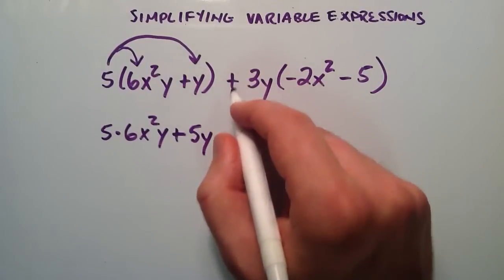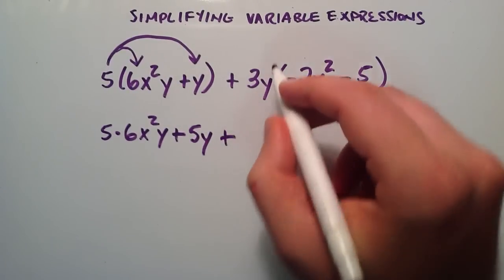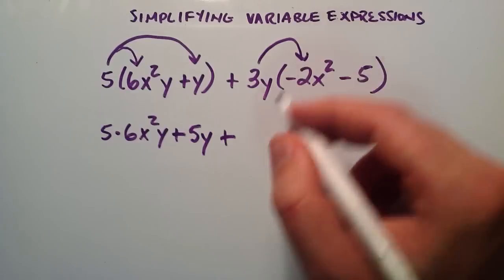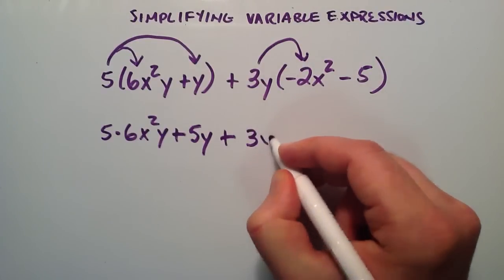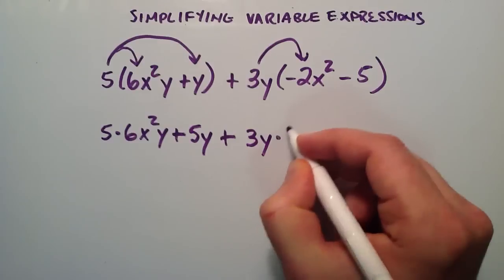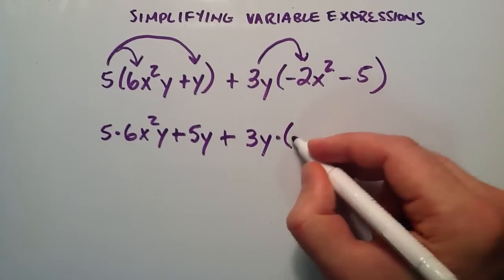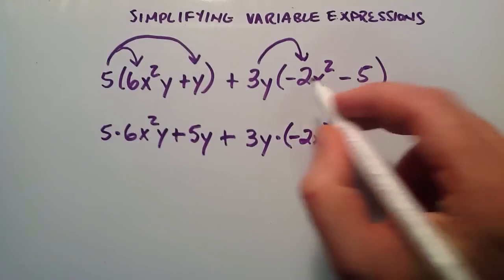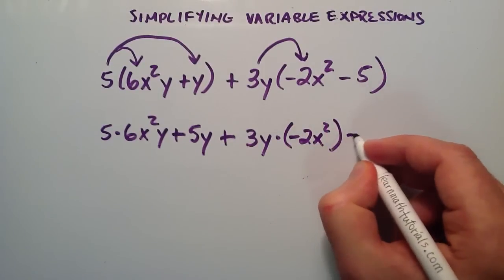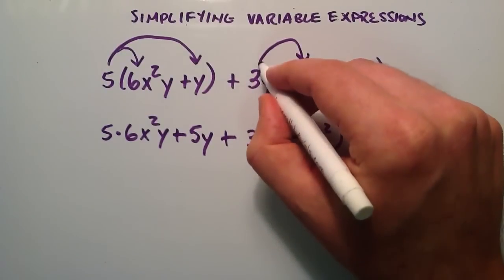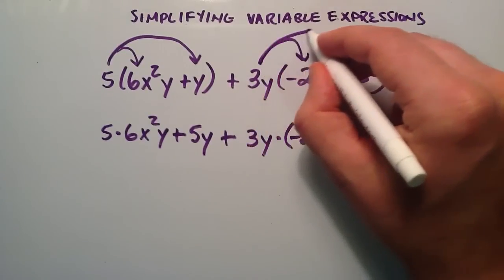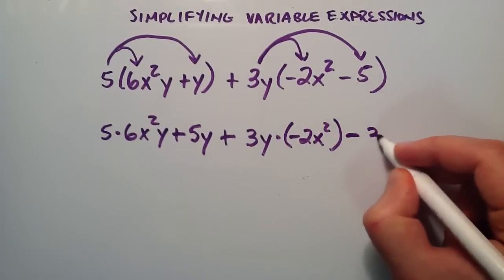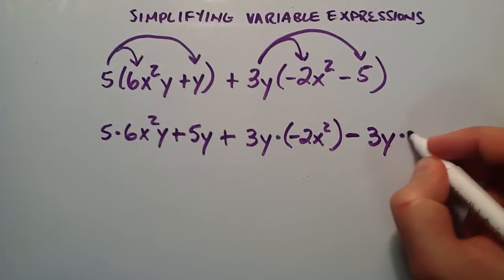So then we put the addition sign here, and distribute 3y into the first term here. So this is 3y times negative 2x squared. And then we put our subtraction sign here, and then we distribute the 3y into the 5. So this becomes 3y times 5.